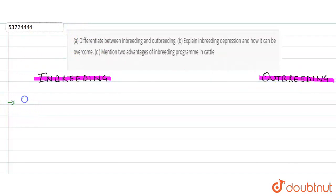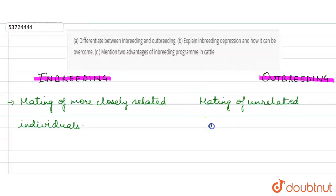First is inbreeding. Mating of more closely related individuals. Jo closely related individuals hote hai, uske andar mating hoti hai, toh jisse hum inbreeding kehte hai. Whereas, iske andar kya hota hai? Mating of unrelated animals. Unrelated animals ke andar mating ko hum outbreeding kehte hai.